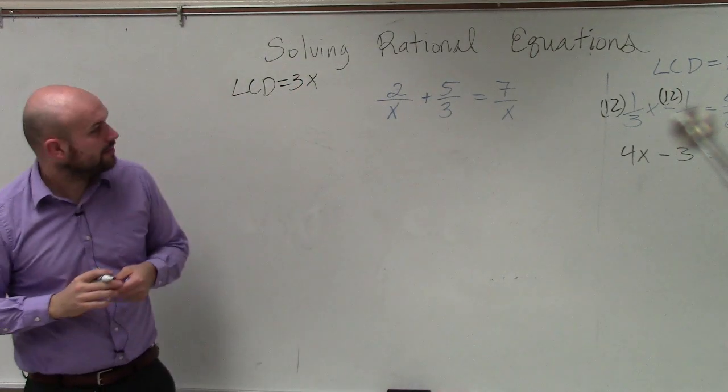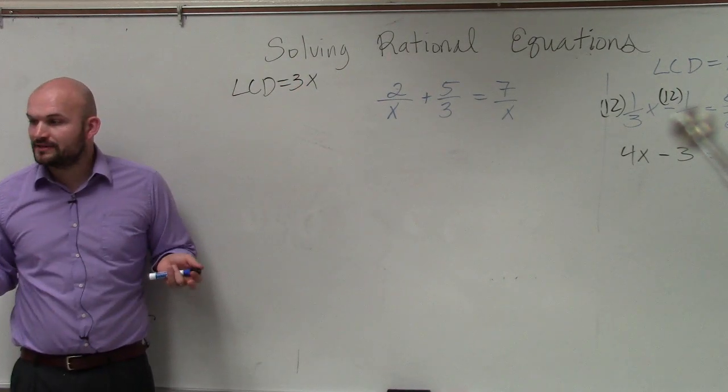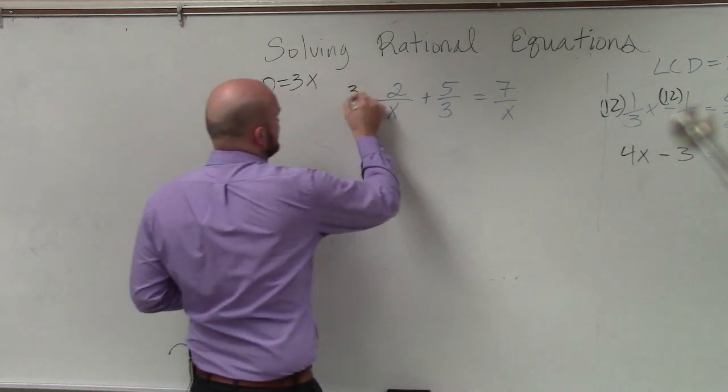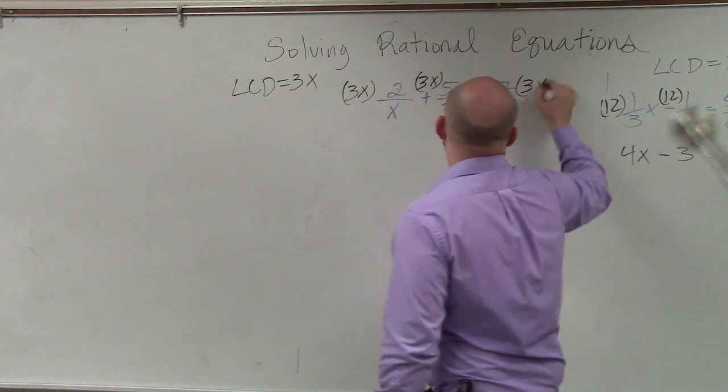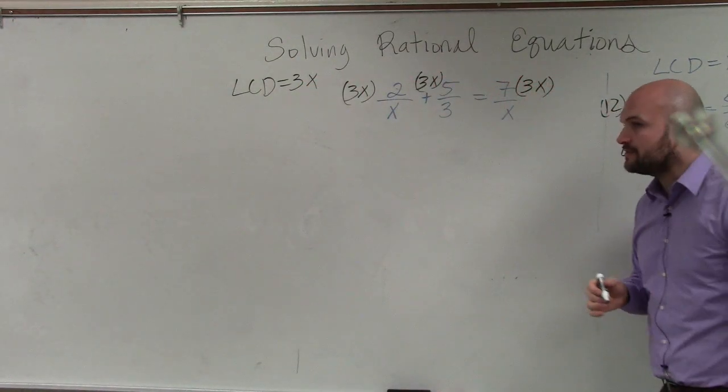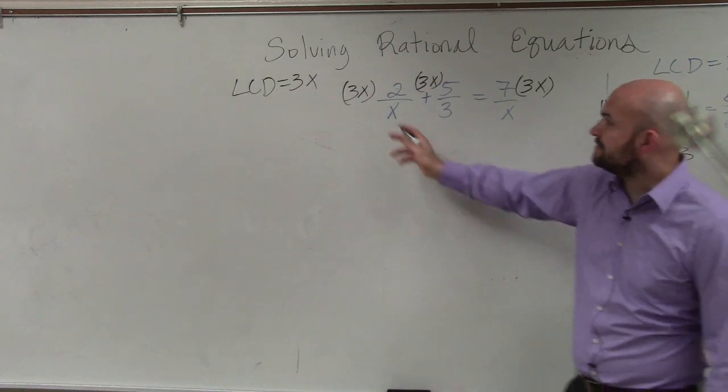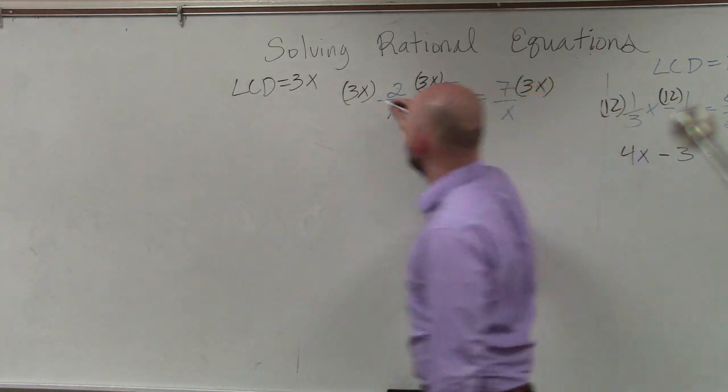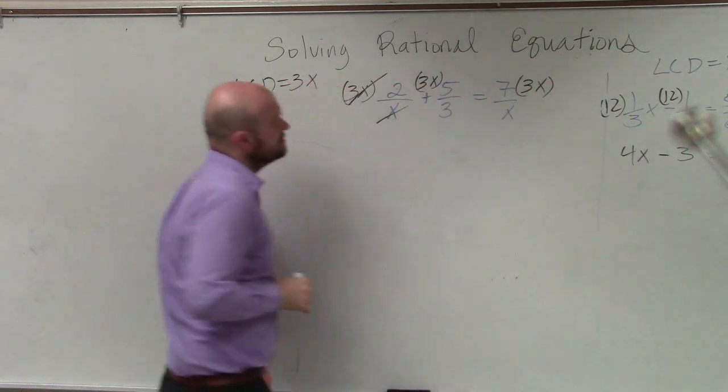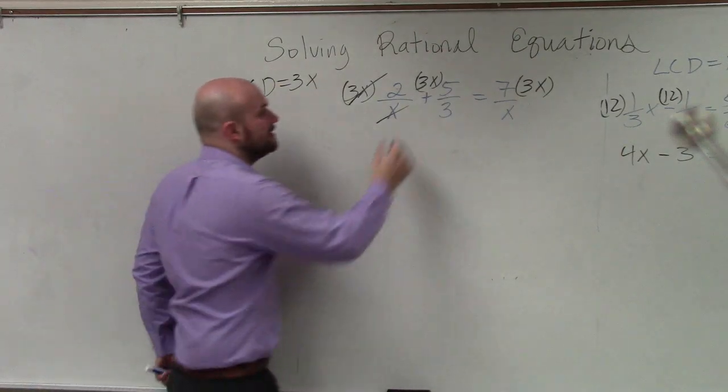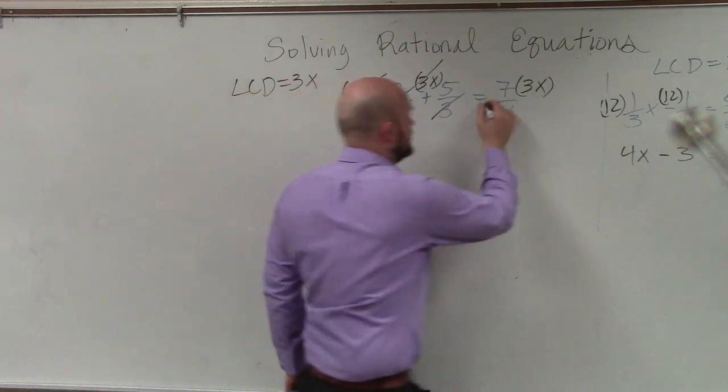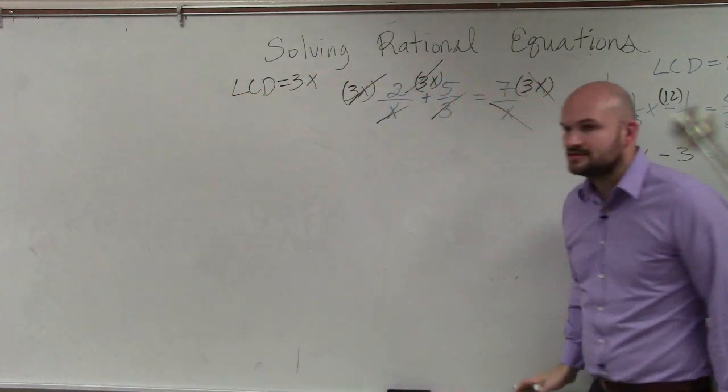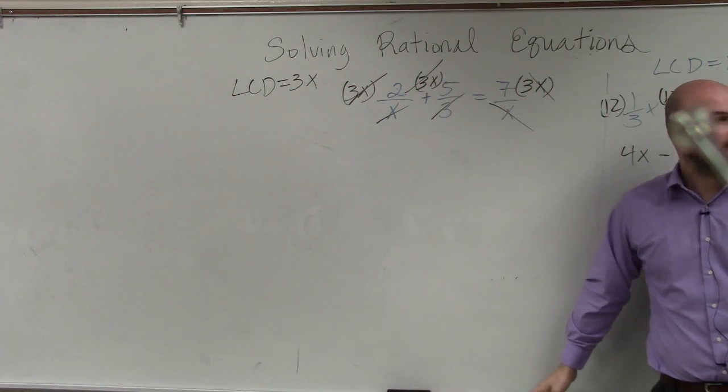And basically, ladies and gentlemen, what we're going to want to do now is just multiply everything by 3x, each one of our terms. So by multiplying by 3x, what we have is, you guys can see here, that my x's divide to 1, here my 3's divide to 1, and here my x's divide to 1. Does everybody see that?